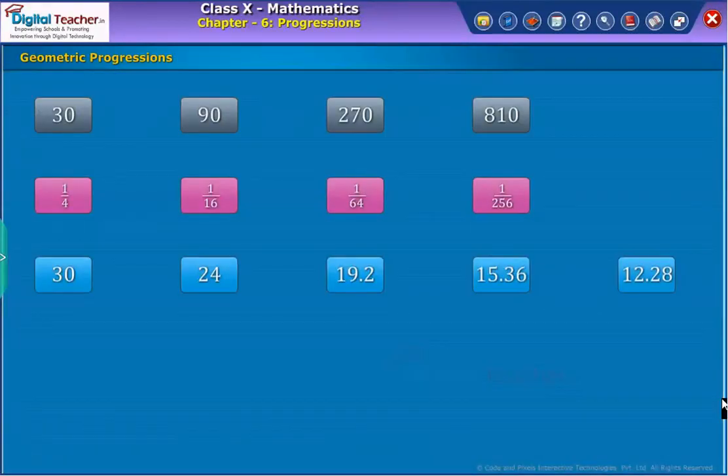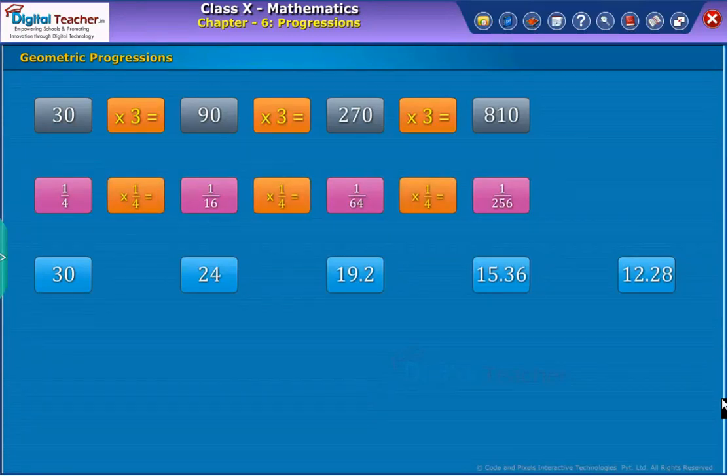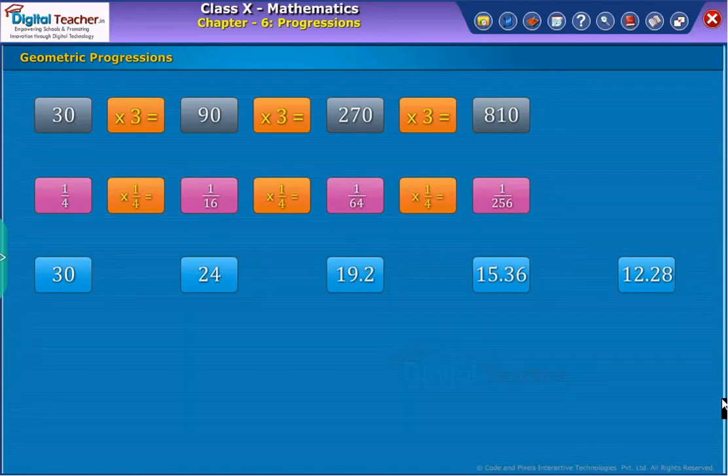Now, observe the lists shown on screen. In the first list of numbers, each term is obtained by multiplying the preceding term by 3. In the second list of numbers, each term is obtained by multiplying the preceding term by 1 by 4.